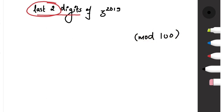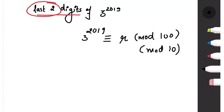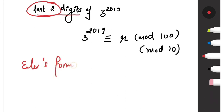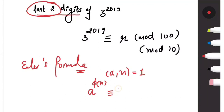For last two digits we use mod 100, and if the question is about the last unit digit we go for mod 10. So we are interested in finding the remainder when 3^2019 is taken modulo 100. We use Euler's formula: if gcd(a, n) = 1, meaning a and n are coprime, then a^φ(n) ≡ 1 (mod n).